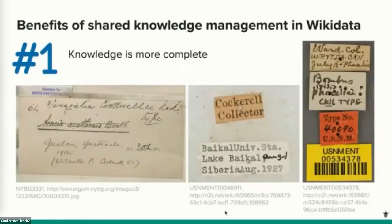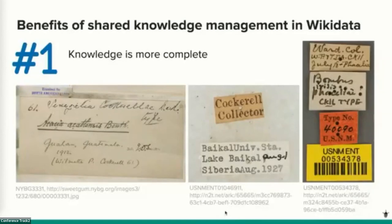One benefit we expected from Wikidata is improved knowledge completeness — for example, by working collaboratively to disambiguate collectors whose specimens are held across multiple institutions. One museum may only have the initials of a collector; another has additional biographical information for the same person. This slide illustrates how Wilmatte Porter Cockerell, a 20th-century American naturalist and collector, has been referred to in many different ways. Looking at labels in isolation, we would have difficulty knowing these were all collected by the same person.